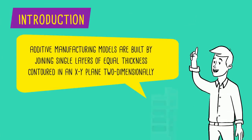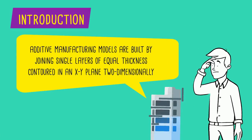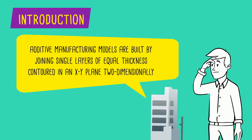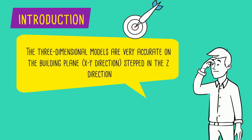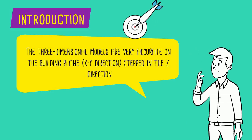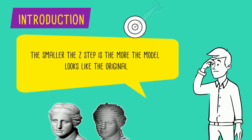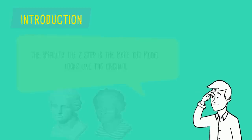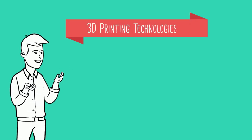Additive manufacturing models are built by joining single layers of equal thickness contoured in an XY plane two-dimensionally. The three-dimensional models are very accurate on the building plane, stepped in the Z direction. The smaller the Z step is, the more the model looks like the original. We are going to discuss the three main 3D printing technologies.